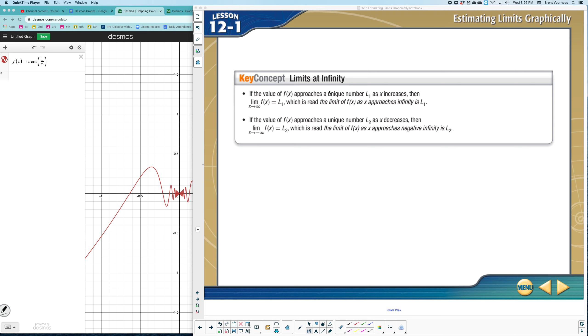As we get ready for this next example, let's talk about the limits at infinity. What this is saying is if the value approaches a unique number L as X increases, then that means that we're going off the screen to the right. As X approaches infinity, then we would have the limit approaching L.